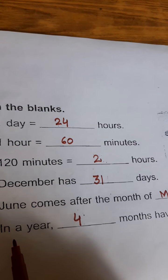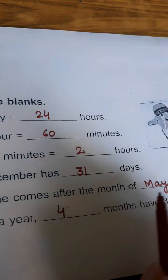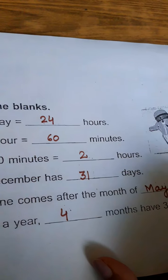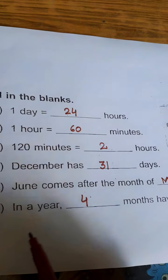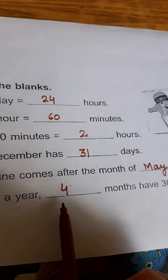December has 31 days - we have done this in the previous question also. June comes after the month of May, so May is the answer. In a year, how many months have 30 days? You can count them - we have four months which have 30 days.